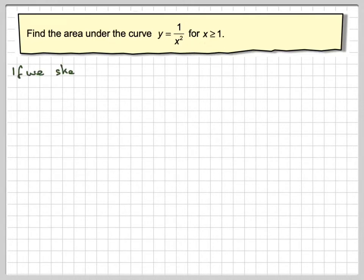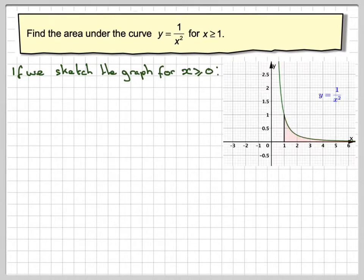If we sketch the graph for x greater than 0, it looks like this. The area that we're required to find is from 1, and where does it actually stop? Well, it's going to stop at infinity because the line y equals 0 is a horizontal asymptote. This actually gets closer to the x-axis but never actually touches, so this goes on forever.